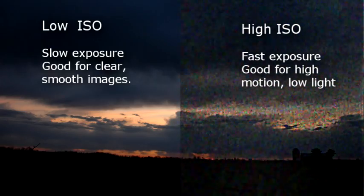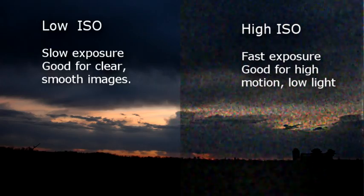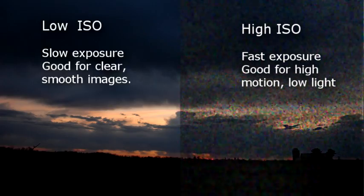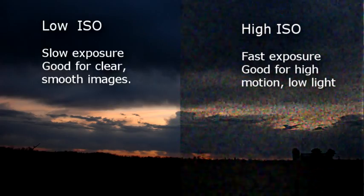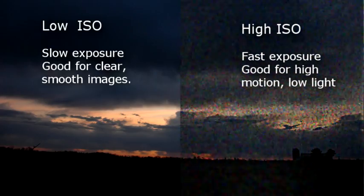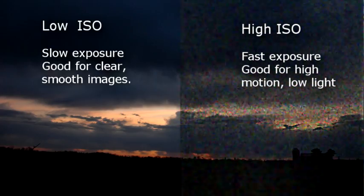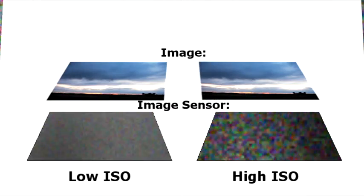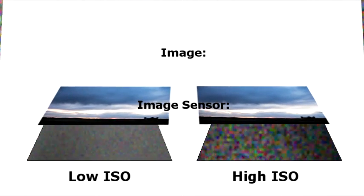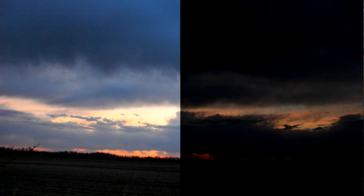In digital photography, ISO controls the gain, or how sensitive the little CCD or CMOS chip inside your camera is to light. Higher ISO makes your sensor more sensitive to light, but it also picks up more noise. A lower ISO is less sensitive to light, but there's less noise. Electronics aren't perfect — there's always going to be a little bit of noise in the system. When you have a lot of light, the noise is easily overpowered, but when you have very little light, the gain turns up, making the image brighter, along with making the noise brighter.